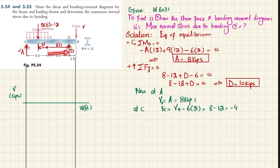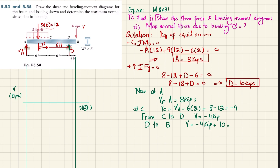From C to D there is no additional load, so shear remains at −4 kips. At D, the shear force becomes −4 + 10 = 6 kips due to the reaction D = 10 kips. From D to B, the 6-kip point load brings the shear force back to zero.